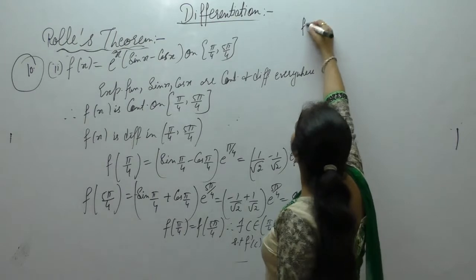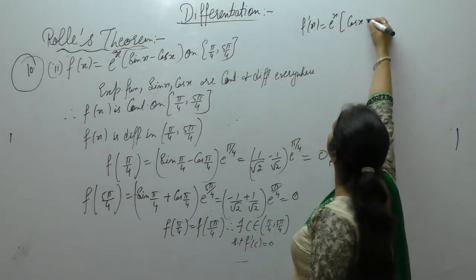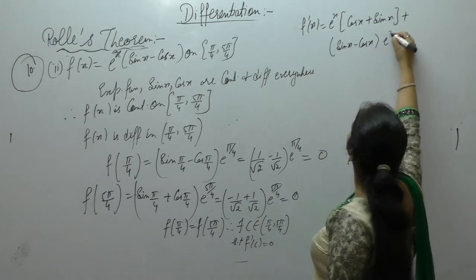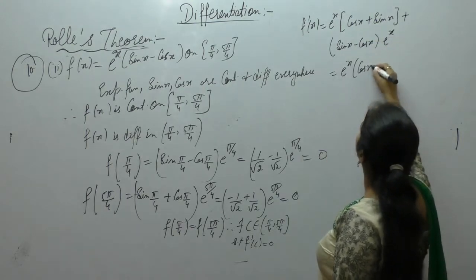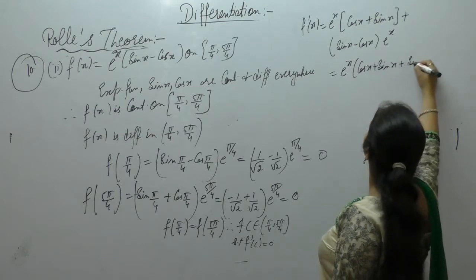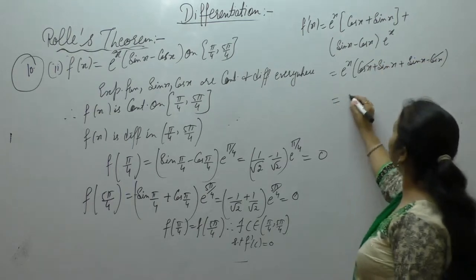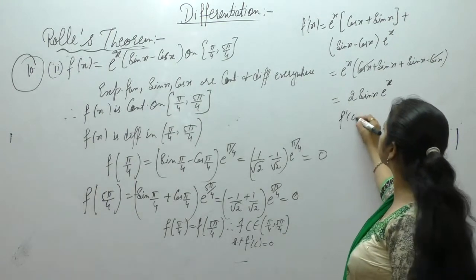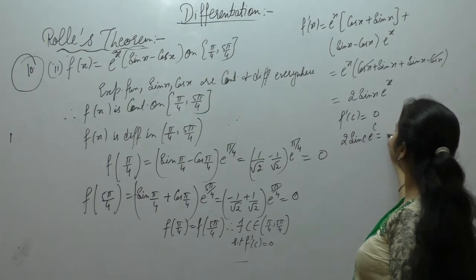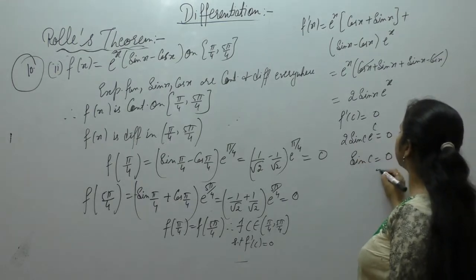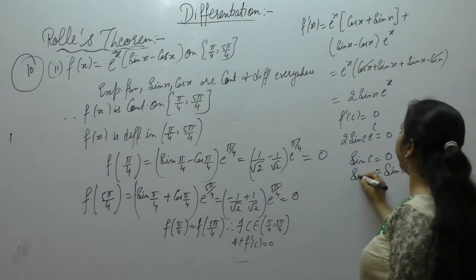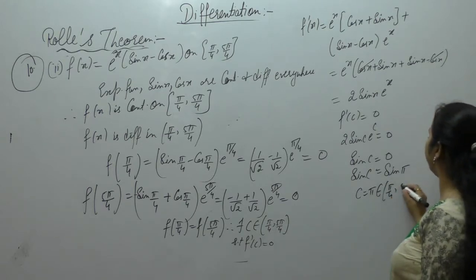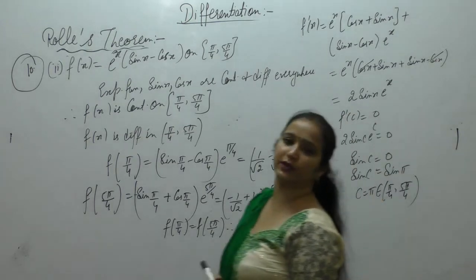Now find f'(x) using the u·v product rule: derivative of (sin x - cos x) times e^x plus (sin x - cos x) times e^x. That gives e^x(cos x + sin x + sin x - cos x) = e^x · 2sin x. Setting f'(c) = 0: 2 sin(c) · e^c = 0. Since e^c ≠ 0, sin(c) = 0, so c = π. Since π belongs to (π/4, 5π/4), Rolle's theorem is verified.